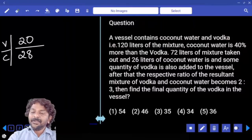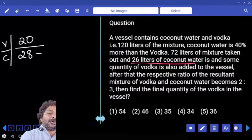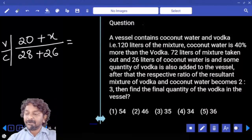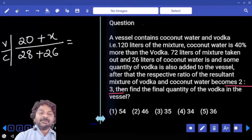To that, 26 liters of coconut water is added. And then some quantity of the other component is added. In final ratio, ratio becomes 2 is to 3.